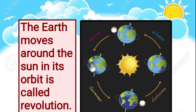Now let's understand about the sun and its role. The sun is the closest star to earth. It is the source of all the heat and light on earth, and life would not exist without the sun.